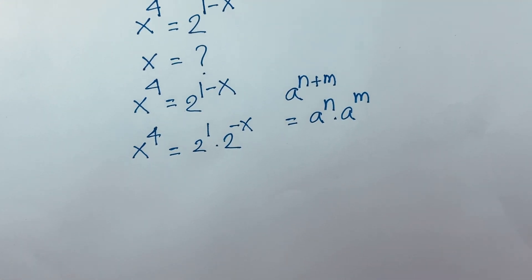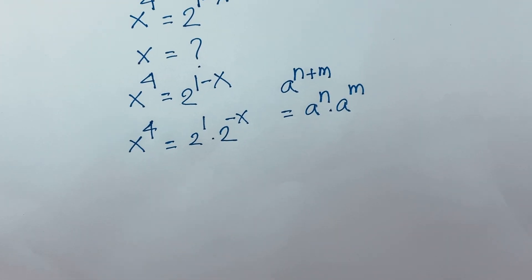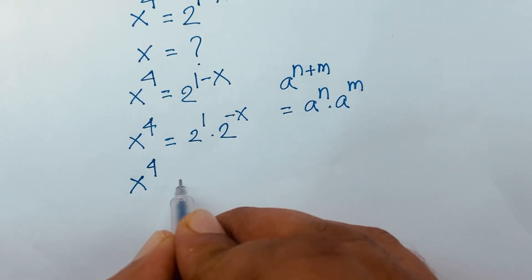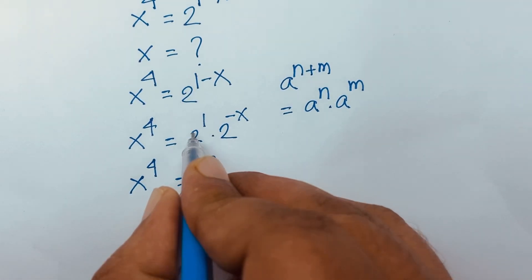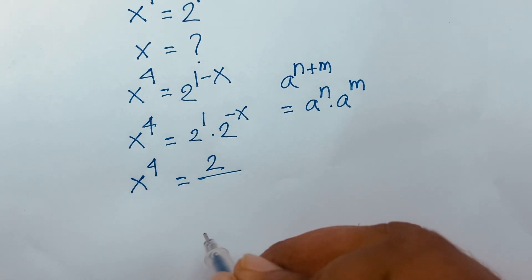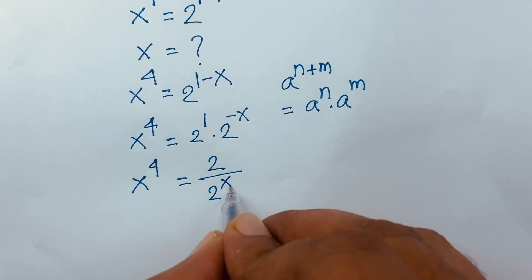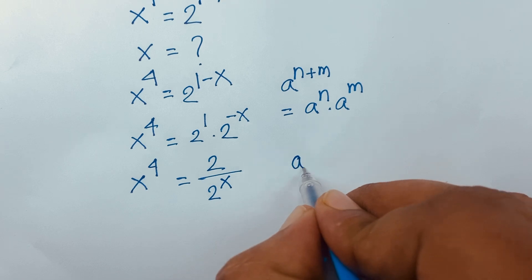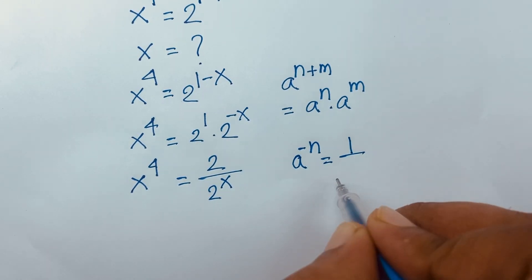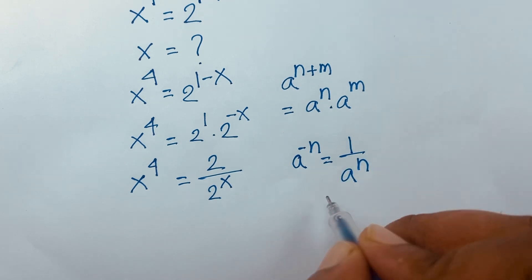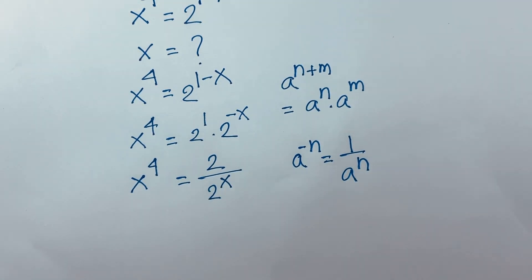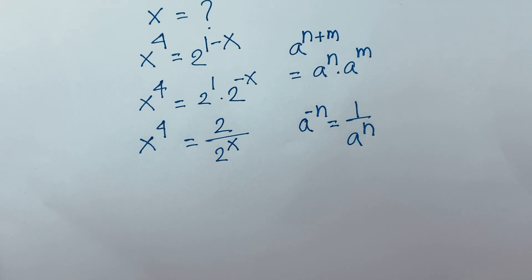Then I can say x to the power 4 is equal to 2 over 2 to the power minus x, which becomes 2 to the power x. Because we know that a to the power minus n is equal to 1 over a to the power n. According to these rules, it will be 2 over 2 to the power x.